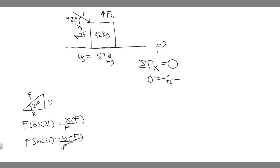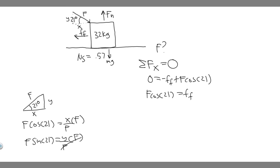Now that we have the x-component, we write it in the equation as positive — it's going in the direction we're trying to move, opposite to friction — so plus F times cosine of 21. Moving the force of friction to the other side: F times cosine of 21 equals the force of friction. The formula for the force of friction is μs times Fn — the coefficient of static friction times the normal force. So F times cosine of 21 equals μs times Fn. To solve for F, we need to find Fn, since we already know μs = 0.57.